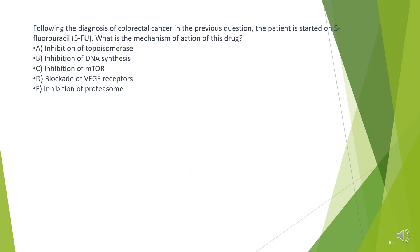Following the diagnosis of colorectal cancer in the previous question, the patient is started on 5-fluorouracil (5-FU). What is the mechanism of action of this drug?